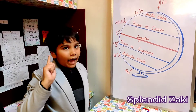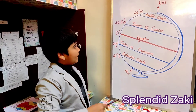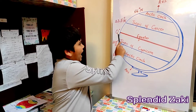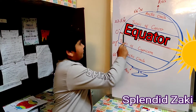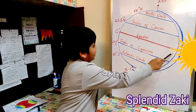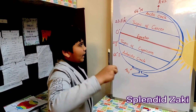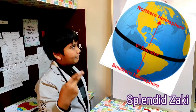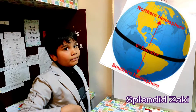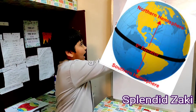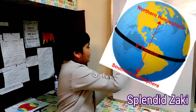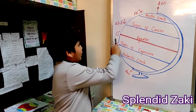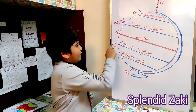And last but not least, this imaginary line is known as the Equator. This is the Equator. It divides the Earth into two hemispheres: the Northern Hemisphere and the Southern Hemisphere. The Equator marks zero degrees on a globe.